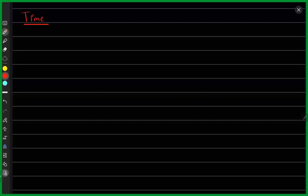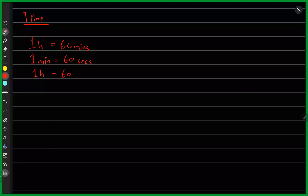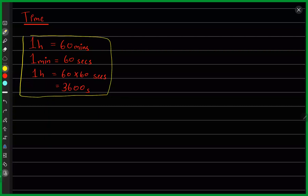It's basically time. Let's talk about some basics about time. We know that one hour has 60 minutes, and one minute has 60 seconds. So one hour has 60 multiplied by 60 seconds, which would be 3600 seconds. This is just some basic stuff that we need to understand in order to convert time from one unit to the other.